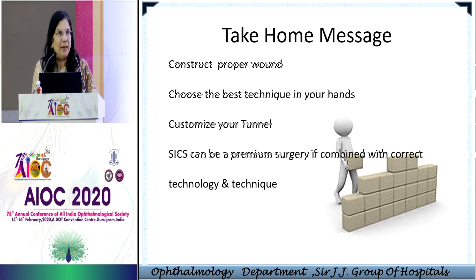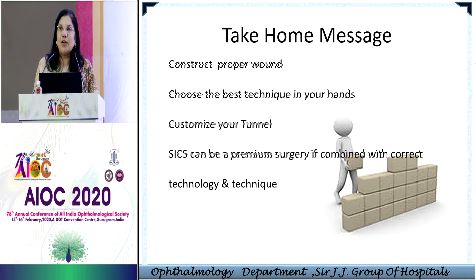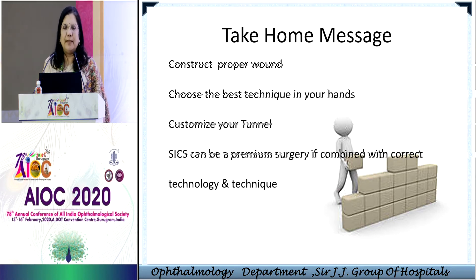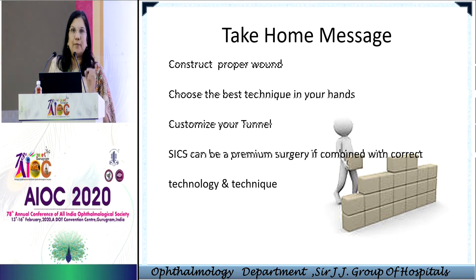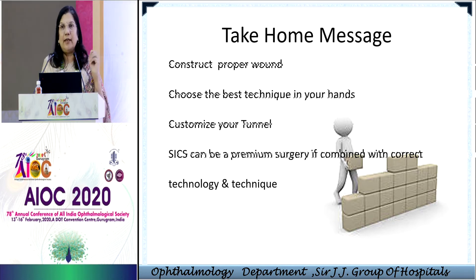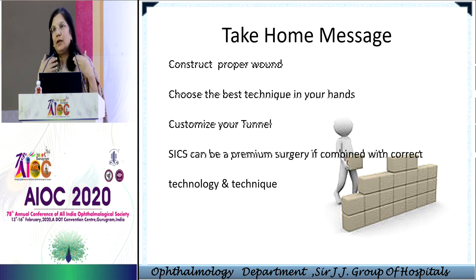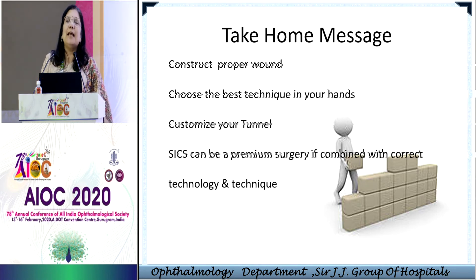Customization of the tunnel is important for each and every patient. As Dr. Kamaljeet Singh said, it is not a suture-less surgery — it is a less-suture surgery. You can take one suture; it is better to have a small suture than to have iris prolapse or endophthalmitis. It can be a premium surgery if combined with the correct technology and technique. Plan your astigmatism, do the tunnel properly, know the astigmatism preoperatively, avoid too much cautery, and avoid holding the tunnel so that the flaps don't become friable and seal properly with no overhanging of the edges. This is the first step in SICS and it should be constructed properly.